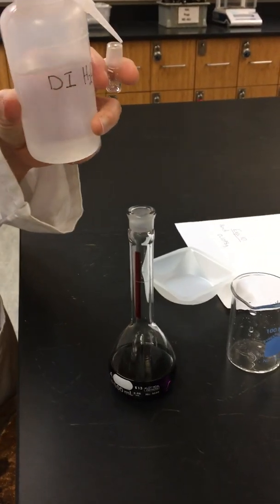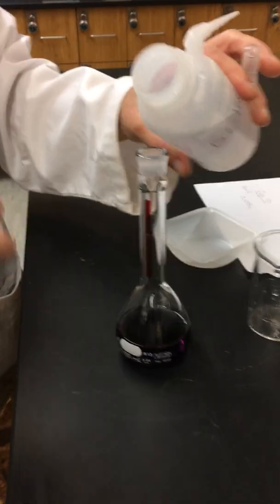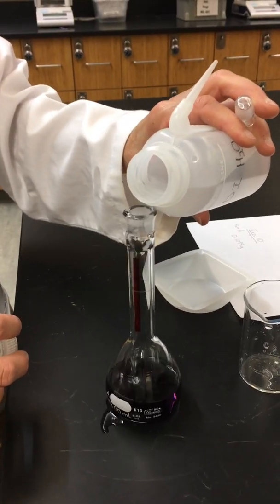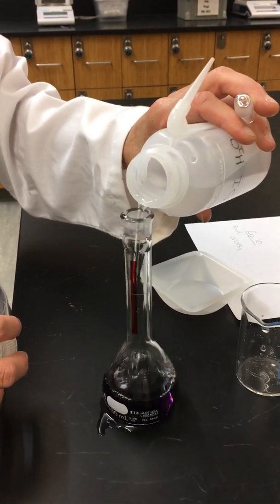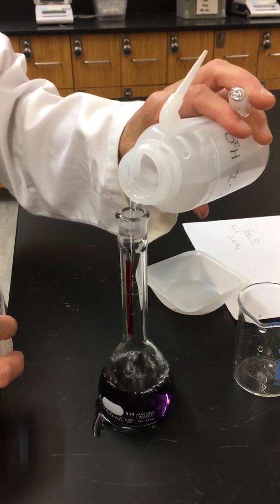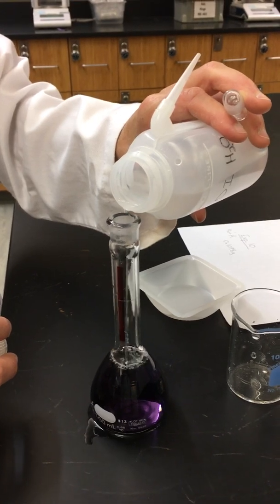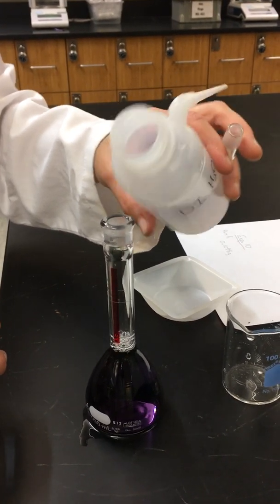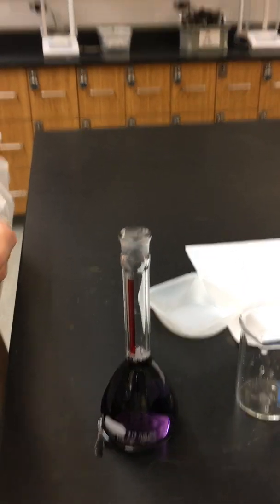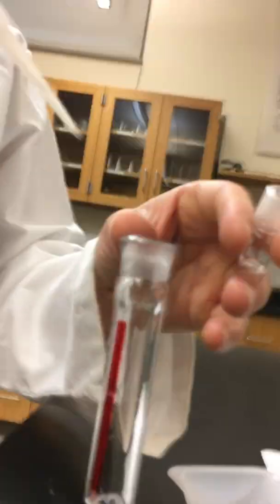So we will pour it to make it go faster. Once I get it kind of close to the line, what we want to do is now slowly add it so we don't accidentally go over.